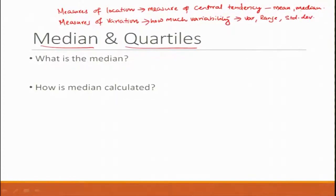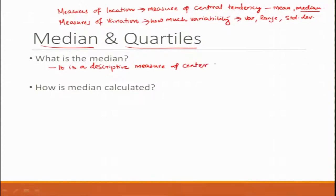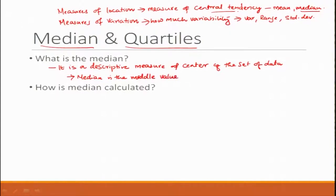One measure of central tendency is the median. The median is a descriptive measure of the center of the dataset. It is the middle value, which means it divides the dataset into two equal parts.